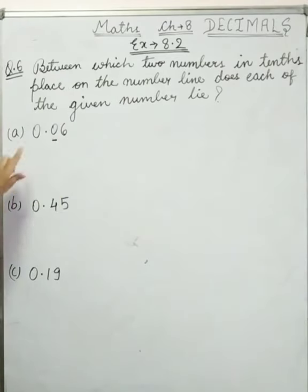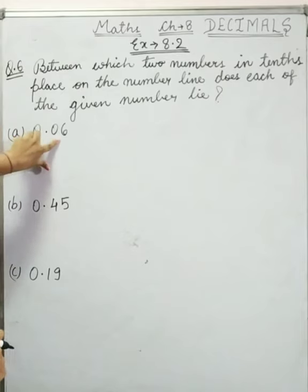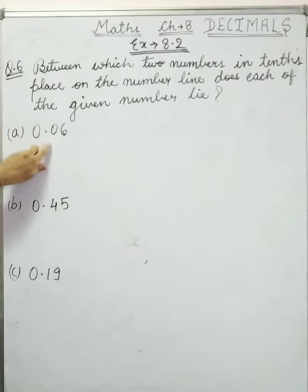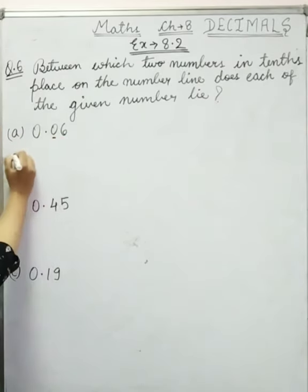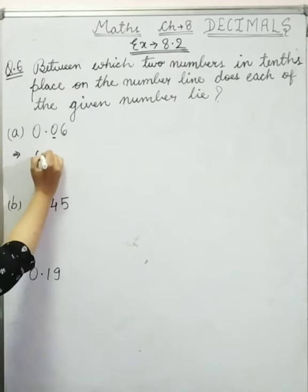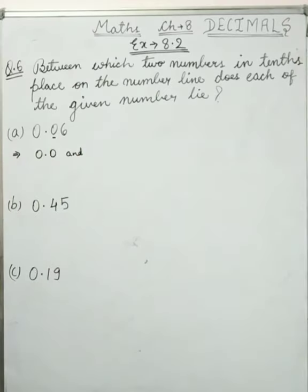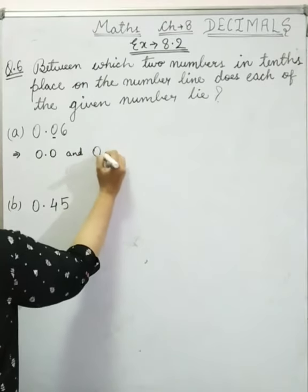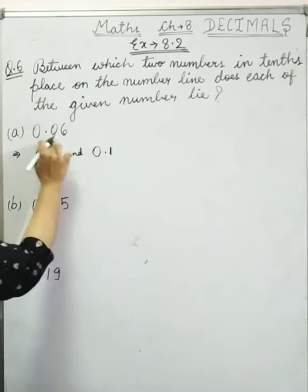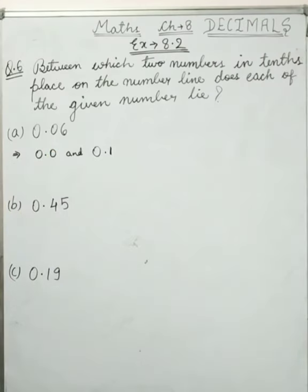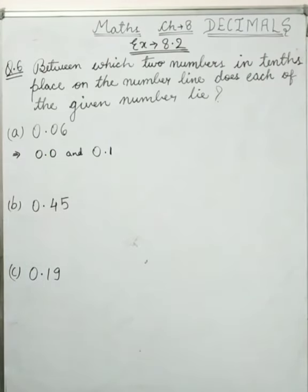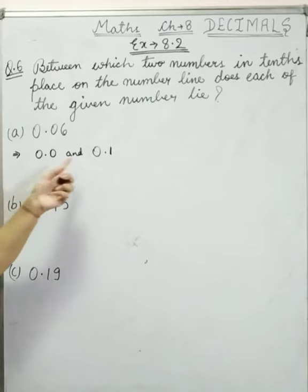Now 0.06. We will call this 0.0 and 0.1. So this 0.06 lies between 0.0 and 0.1. Now we will call this 0.0 and 0.1.